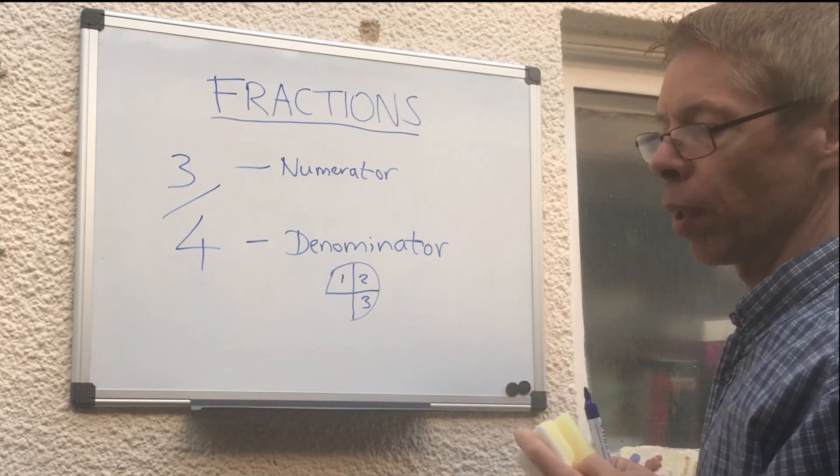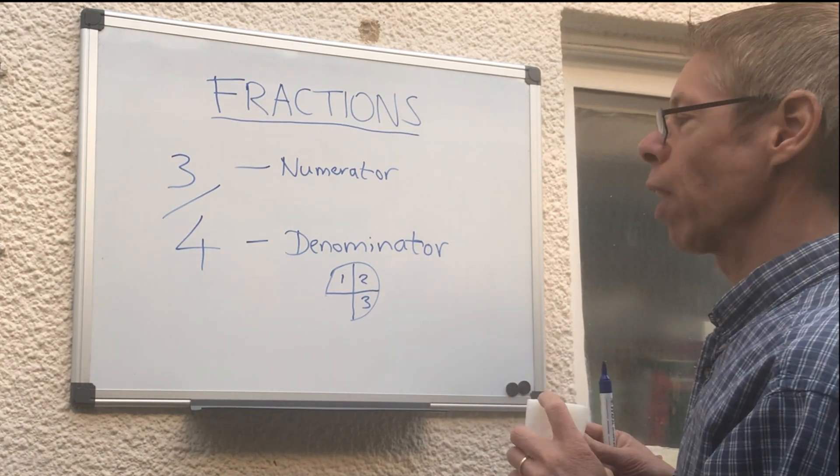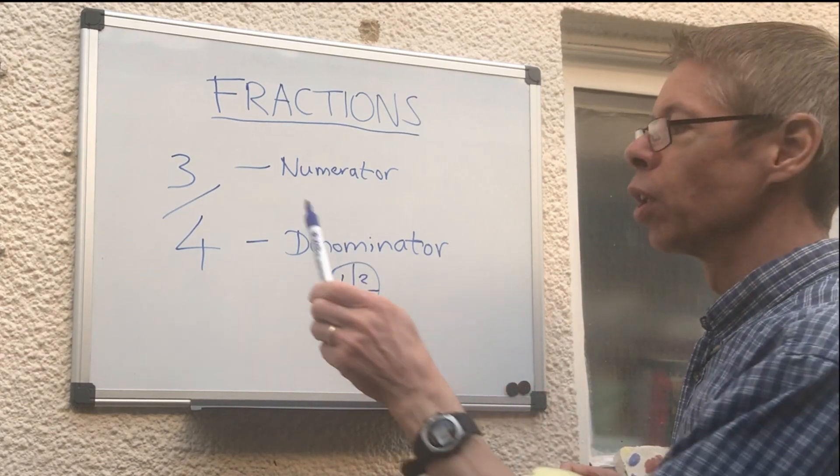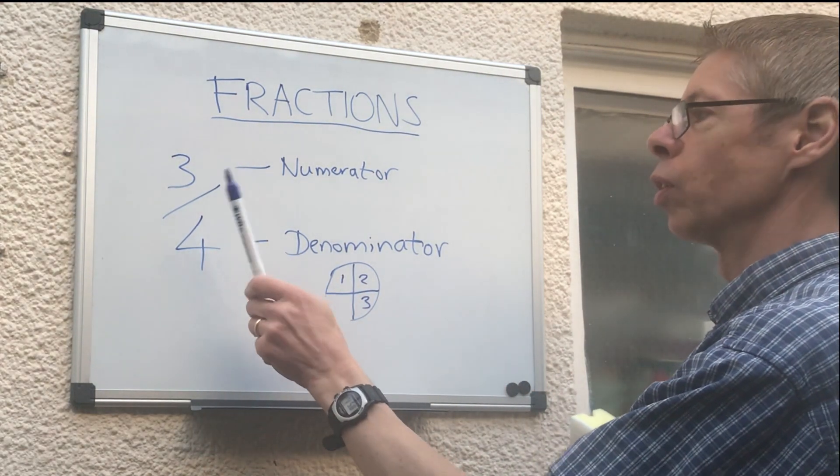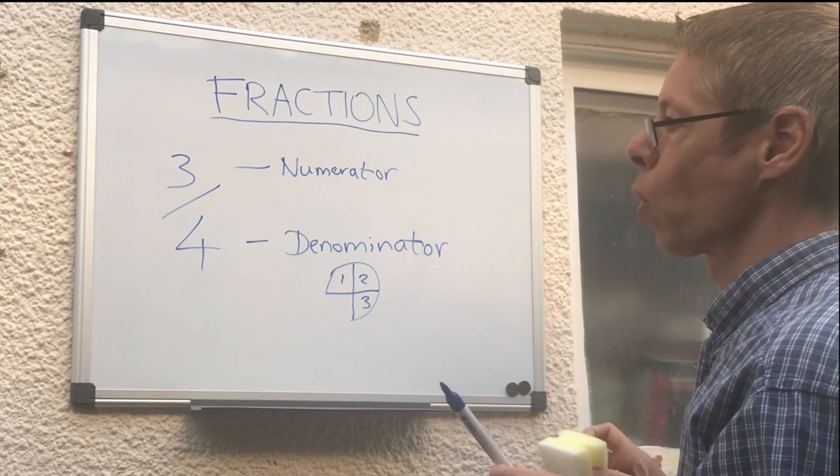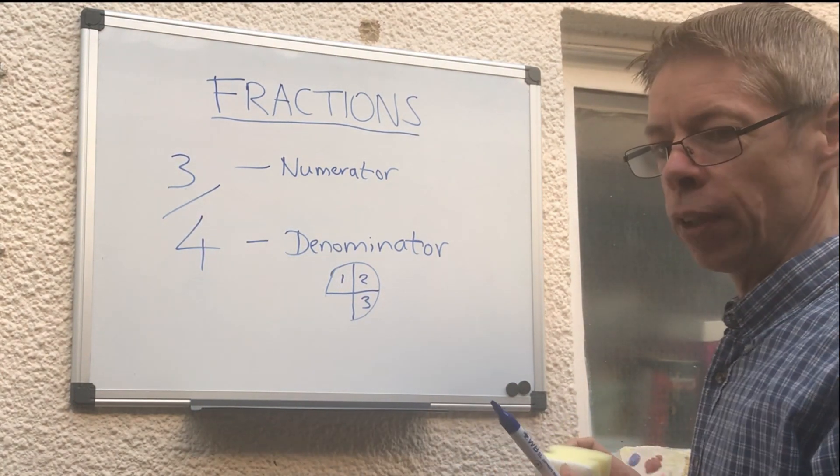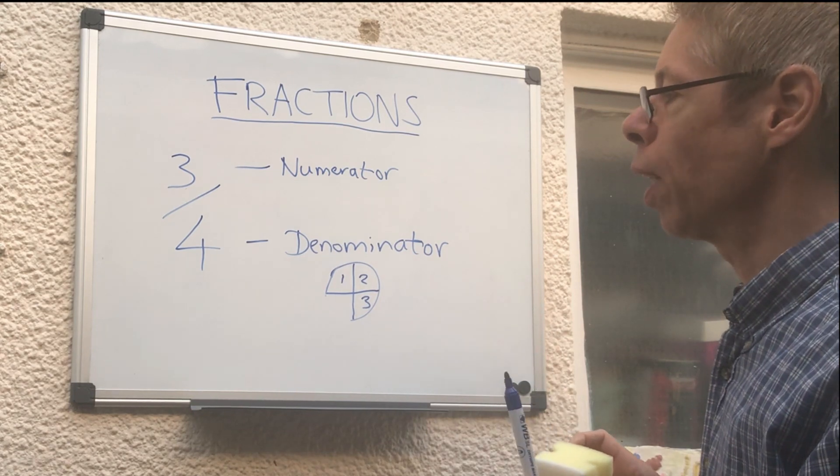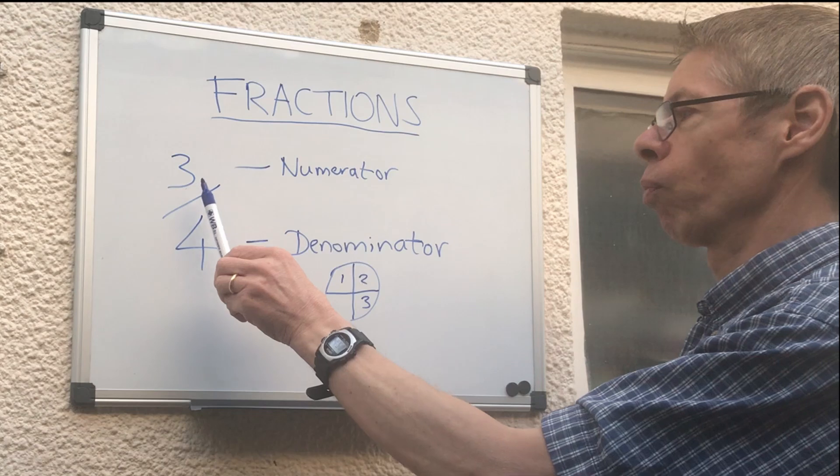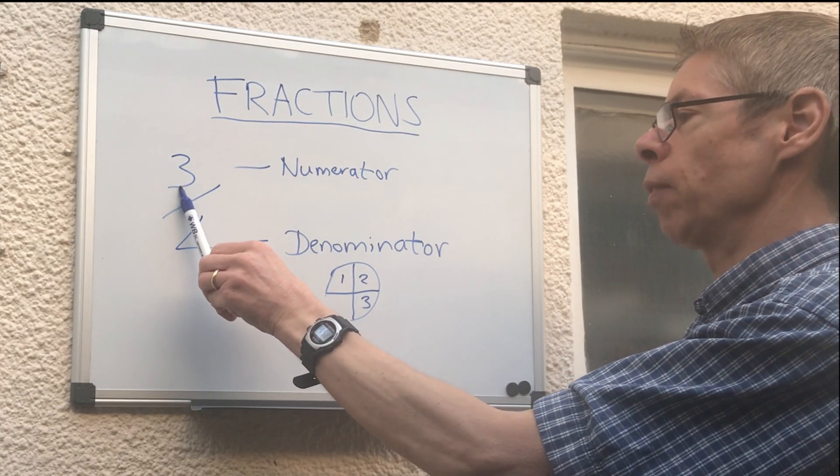Okay, so a quick recap on fractions. Fractions are a division sum where we've got a number here divided by the number here. There's different ways you can think of a fraction. You can think of a fraction as, like we said, a division sum.